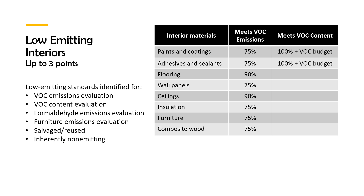The next credit is to choose low-emitting materials. The intent is to reduce chemical contaminants that can damage air quality, the environment, and the health of the occupants. The requirement is to use materials on the building interior that meet low-emitting criteria. Each type of building material has a percentage that must meet the VOC emissions and content. There are low-emitting standards identified for evaluating VOC emissions and content, formaldehyde, furniture, or salvaged or reused materials. Inherently non-emitting materials include stone, ceramic, glass, concrete, unfinished wood, and others.